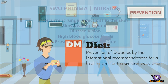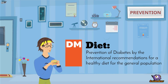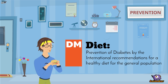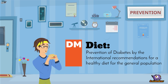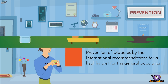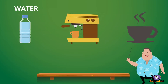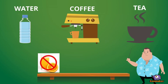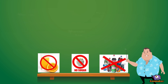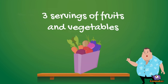The International Diabetes Federation has a list of recommendations for a healthy diet for the general population. Number 1: choosing water, coffee, or tea instead of fruit juice, soda, or other sugar-sweetened beverages.